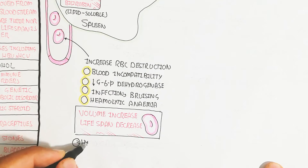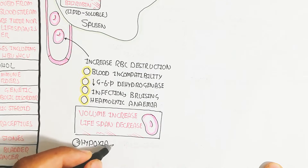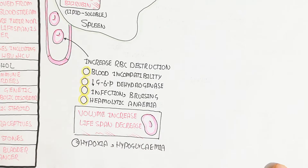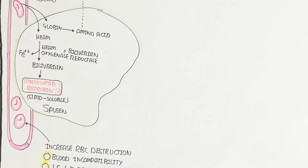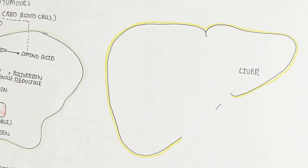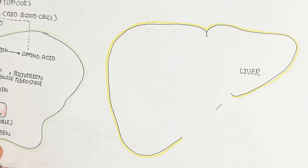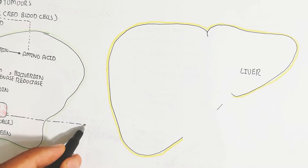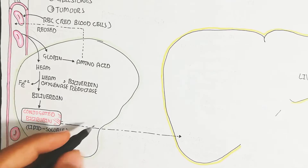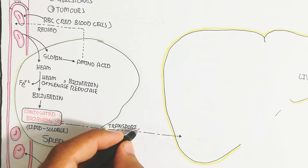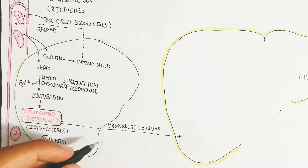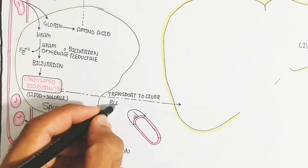Hypoxia and hypoglycemia are also causes of jaundice. The spleen converts RBCs into unconjugated bilirubin, which enters the blood circulatory system and is transported to the liver.